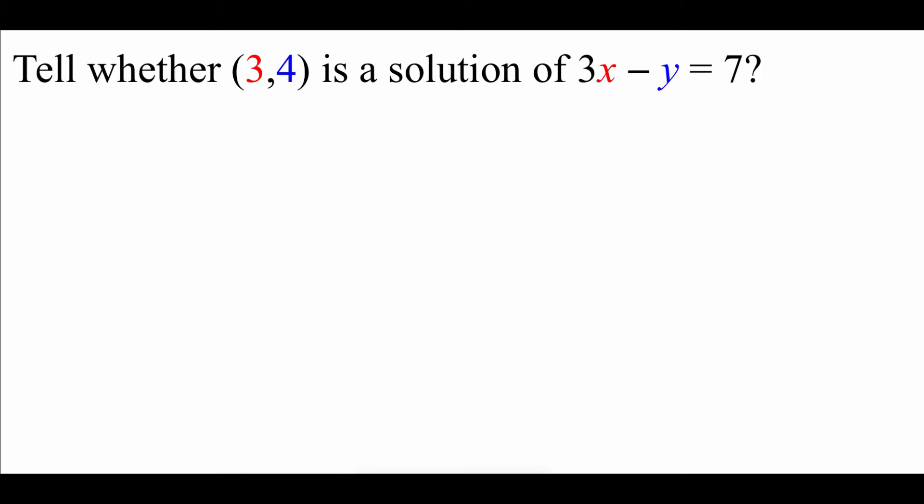We're given the point (3, 4) and we want to check to see if it's a solution to the equation 3x minus y equals 7. What we're going to do is take the numbers from the ordered pair and plug them in for the appropriate variable. We're hoping to see the left side match up with the right side. If they match, the point is a solution; if not, it's not a solution.